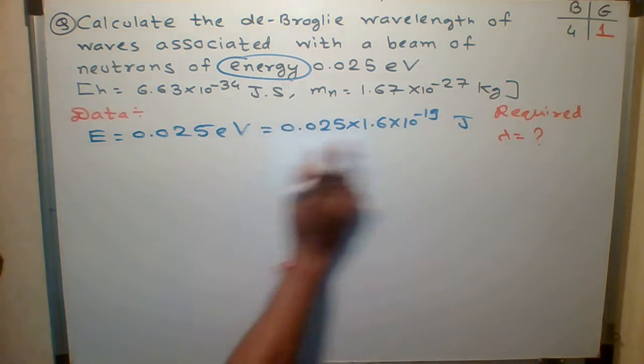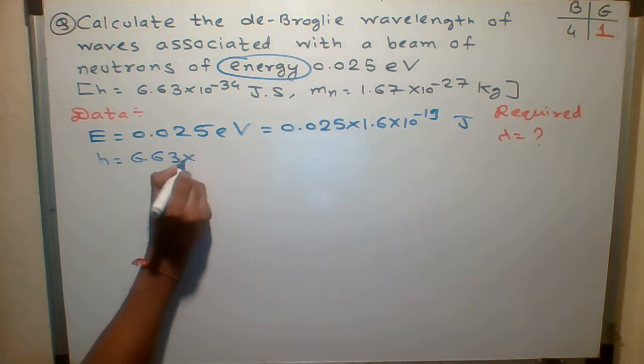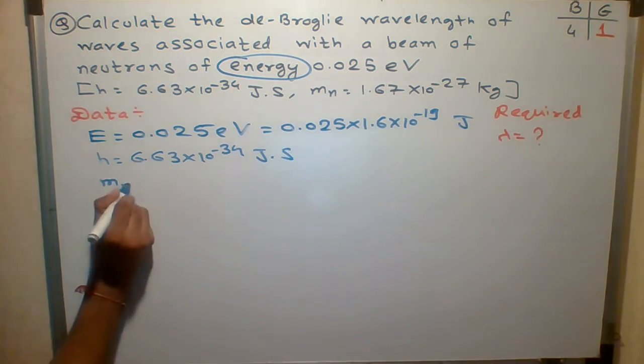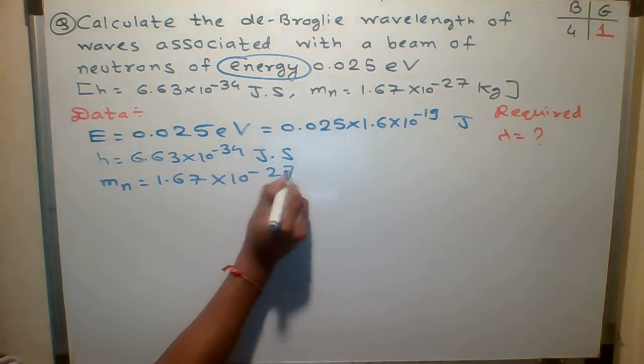So energy is given, you have to convert into joule. Value of h is given: 6.63 into 10 to the minus 34 joule second. And mass of neutron is given: 1.67 into 10 to the minus 27 kg.